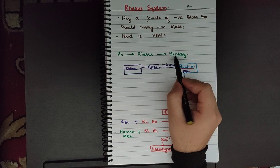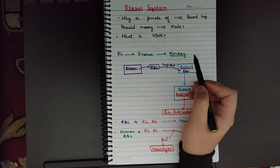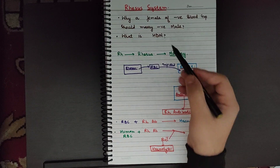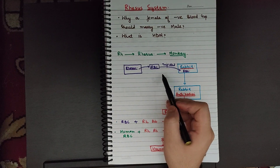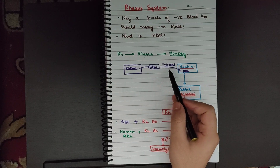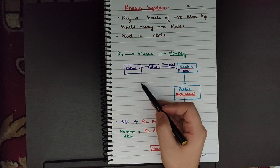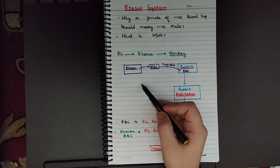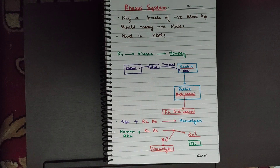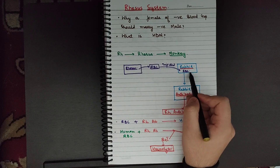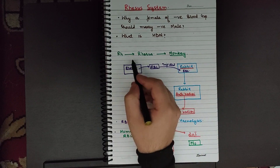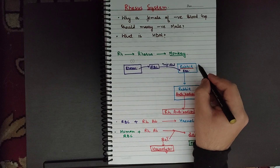Rhesus is the name of a monkey — it's a type of monkey. To understand this system, let's first understand the experiment which was done many years back. This experiment is very important. I have covered most of the topics of blood groups in the previous video; you can watch that if you haven't yet. So let's start: we have a Rhesus monkey and a normal rabbit — two organisms.